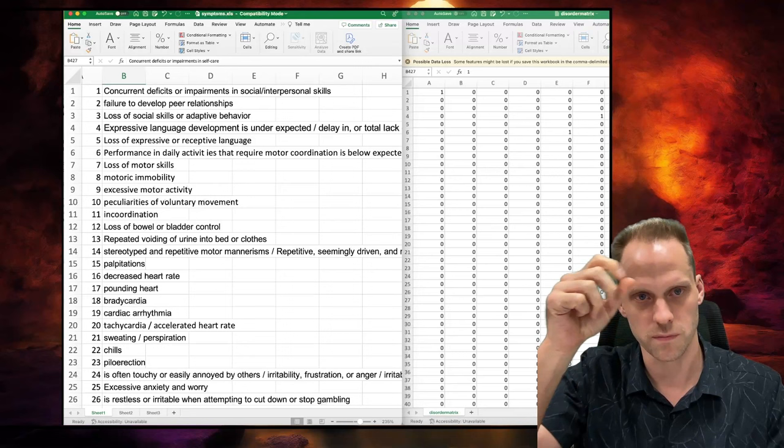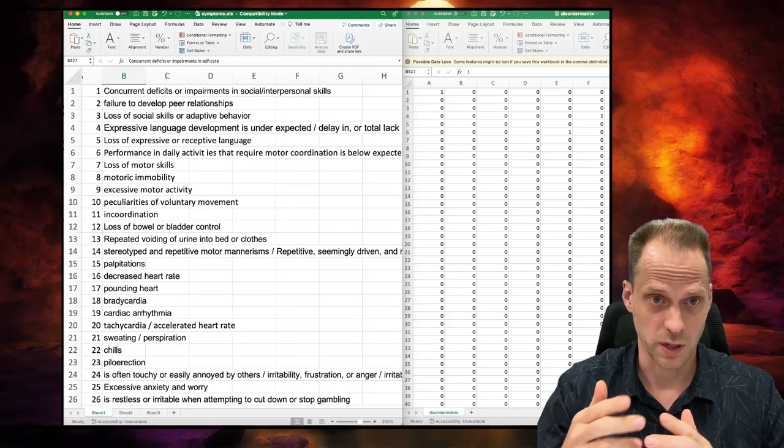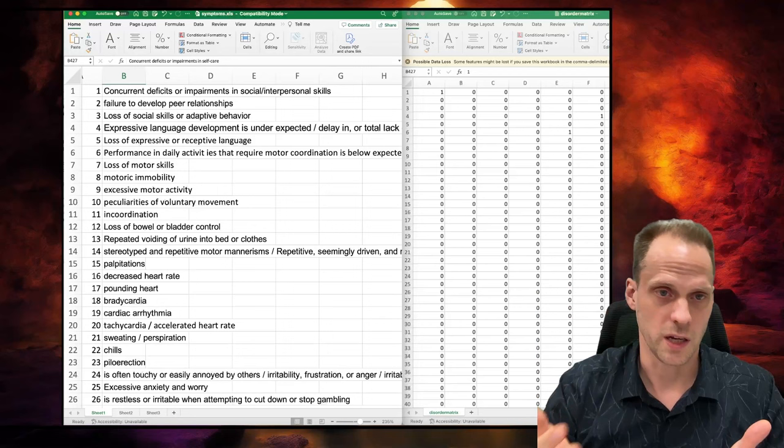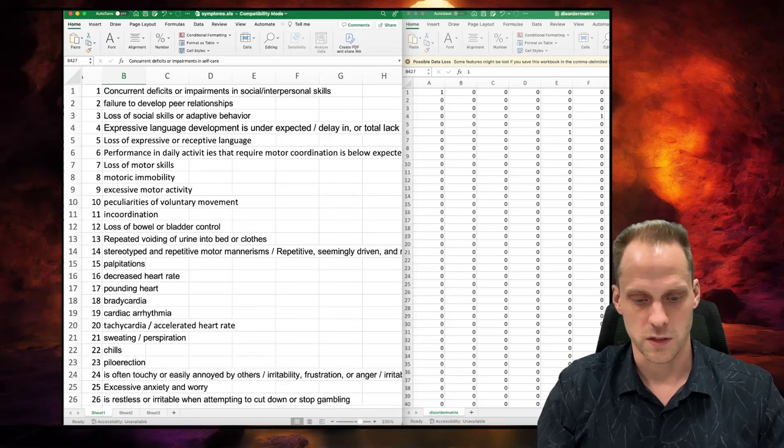And then they also encoded for each symptom by each disorder if a symptom was part of a disorder. So they had a big binary matrix with a row for each symptom, a column for each disorder in the DSM, simply a one indicating that symptom's in the disorder and a zero indicating a symptom is not in the disorder. Now, what they wanted to do is make a symptom by symptom network where two symptoms are connected with each other if they share a disorder.